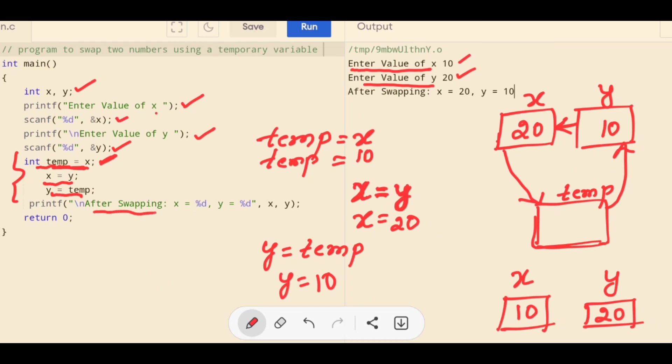And you are printing that exchanged values here in the printf statement. This is what is the printf. After swapping, whatever you write here in the printf, after swapping, x is 20 and y is 10. So, this is the logic here to swap two numbers using a temporary variable. We have one more logic wherein without using a temporary variable also, we can exchange the numbers, we can swap the numbers. I shall discuss that logic in the next session.